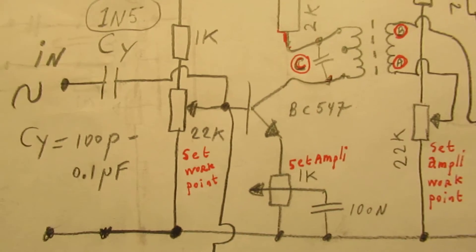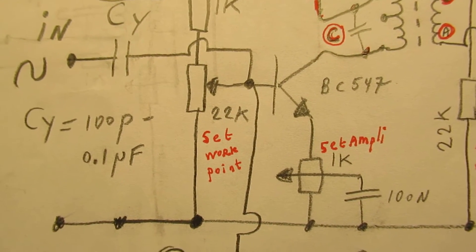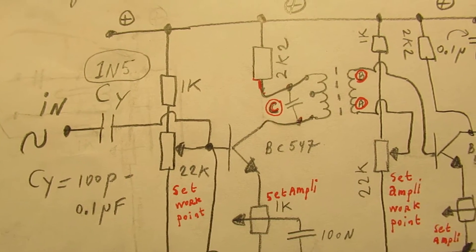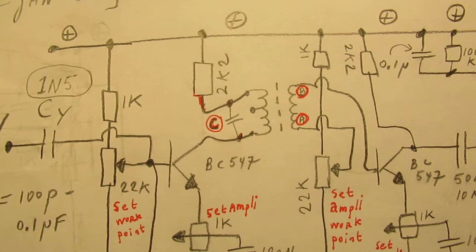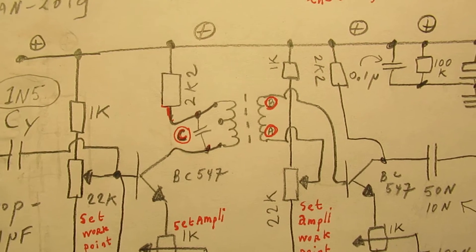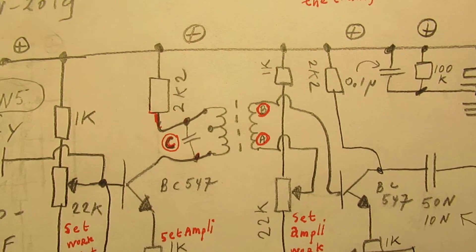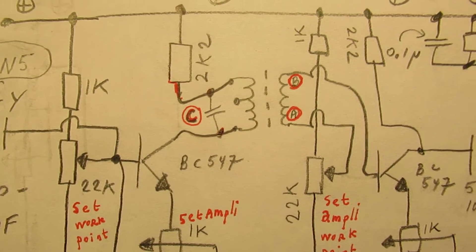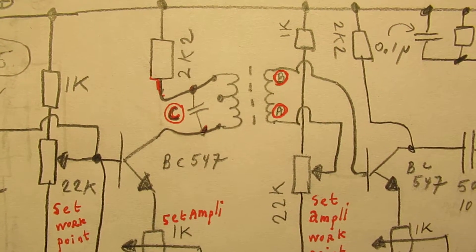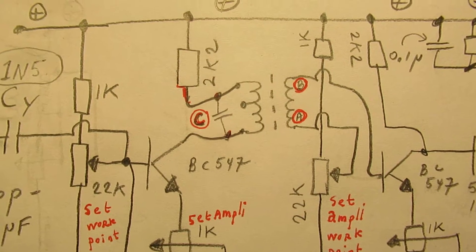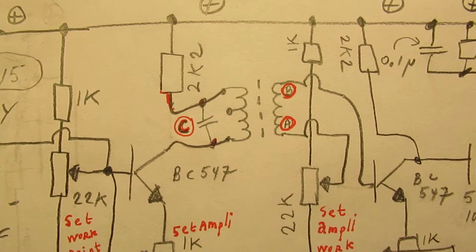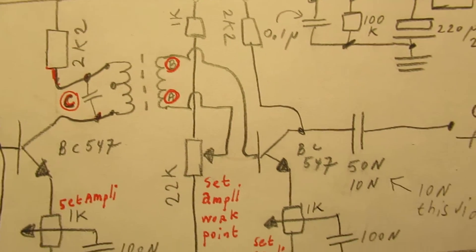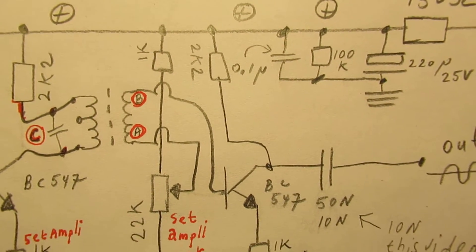But I've used here now two potentiometers of 22k to set the working point, and that is necessary when you want to use a transformer that has a coil. So the impedance of such a transformer is not endless - on the contrary it's very low, so the impedance that the transistor stage sees at its input is also very low.